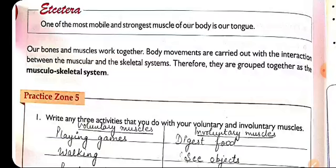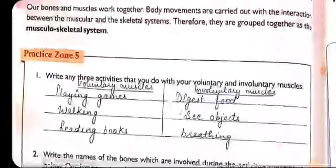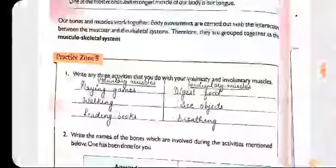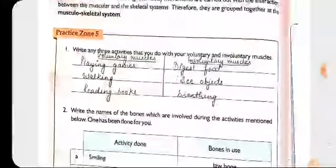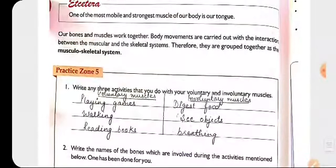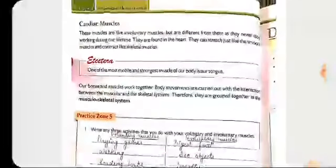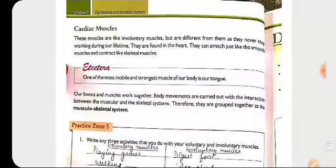Since bones and muscles work together with each other and carry out various interactions between the muscular and skeletal system, together they form the musculo-skeletal system. In the next video, I will cover the practice zones and the observation question answers. Thank you students, bye bye.